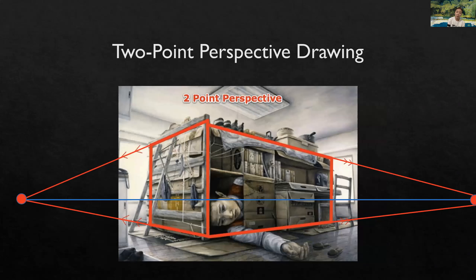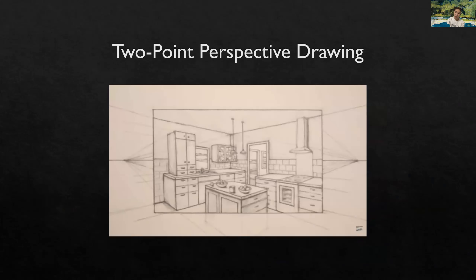And this is a two-point linear perspective drawing. As you can see, there are two points on the left and the right side of the drawing. It is a good technique to show a dynamic view with foreshortening in the work of art. Here is another example of two-point linear perspective — it is slightly harder than one-point perspective because it adds one more point, which makes the work a little more complicated but looks more dynamic.